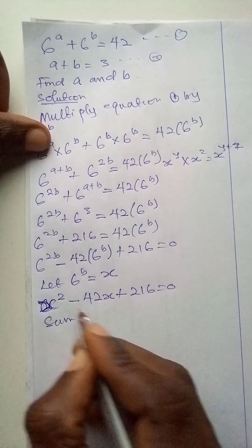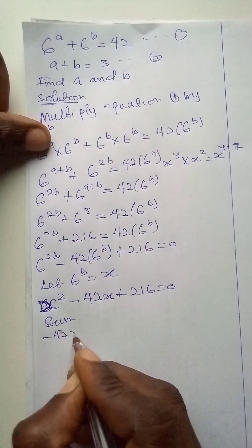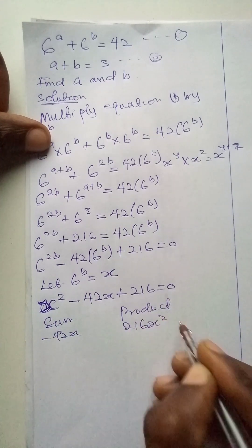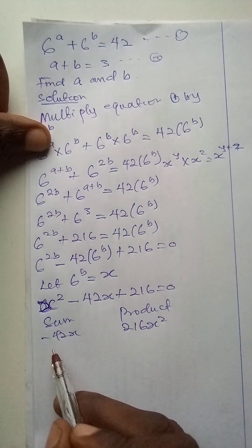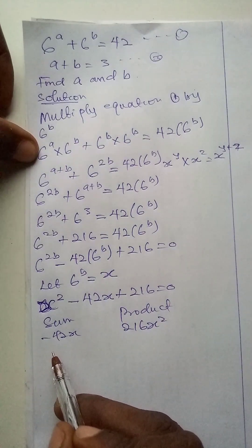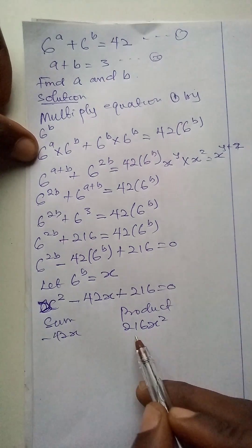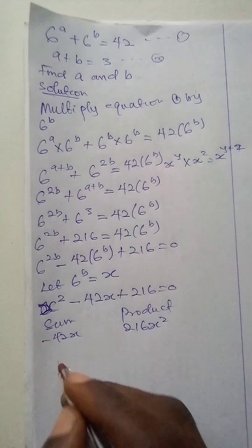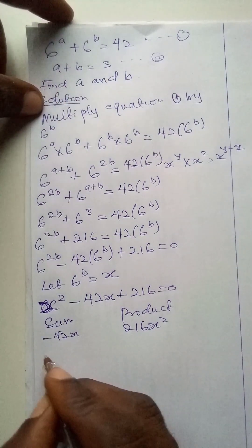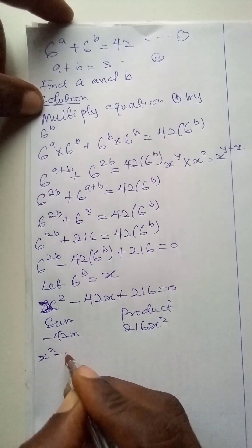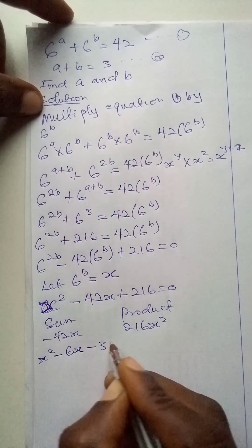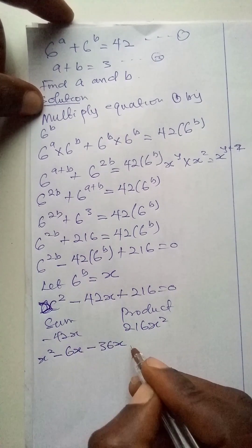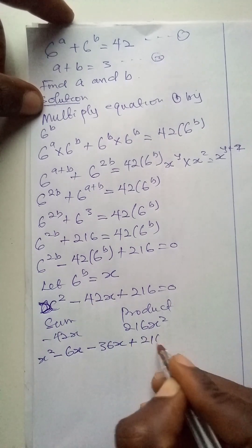So I will find my sum and product. My sum is minus 42x, and the product is 216 x squared. So I will look for two numbers that add to give 42 and multiply to give 216. Those numbers are 6 and 36. So what I have is x squared minus 6x minus 36x, which gives minus 42x, then plus 216 is equal to 0.